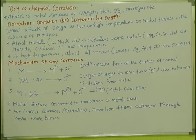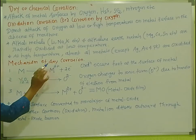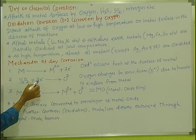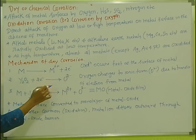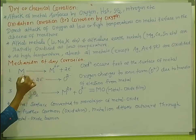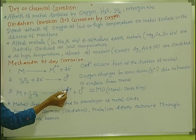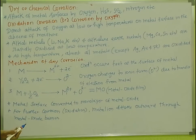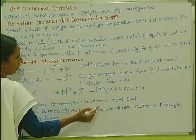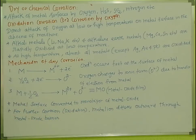The first step is the metal becoming a cation by losing electrons. The second step is oxygen converting to ionic form. The third step is the metal ion combining with the oxygen ion to make a metal oxide. A layer of metal oxide is formed on the metal surface.